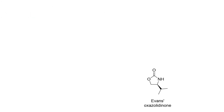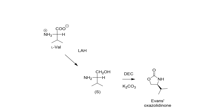Now let's take a brief look at the synthesis of Evans' oxazolidinone. The target molecule is heterocyclic with a 1,2 amino alcohol and a 1,1 carbonic acid derivative. So if we disconnect the one-carbon A1 fragment, we can head back to L-valanol. Diethylcarbonate serves as the A1 reagent. L-valanol, in turn, is obviously made from L-valine, which we reduce with lithium aluminum hydride.